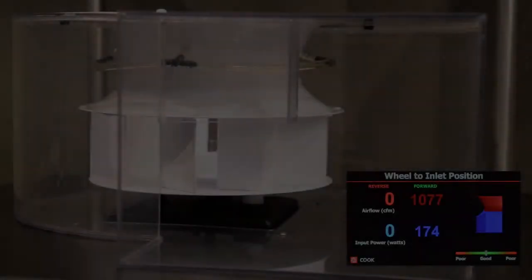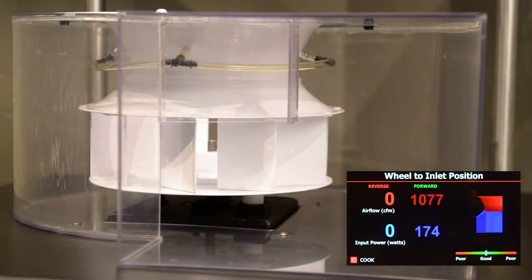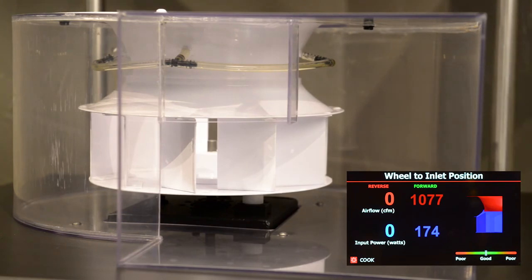Now, let's take a look at how improper wheel rotation affects fan performance. This is the number one cause of low system airflow, improper wheel rotation. The wheel shown here is a backward inclined wheel, sometimes referred to as a BI wheel.